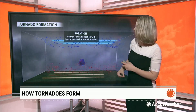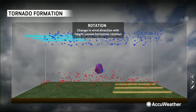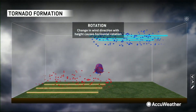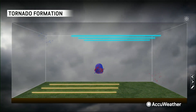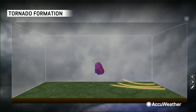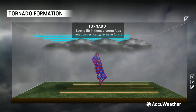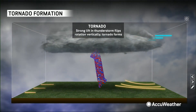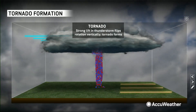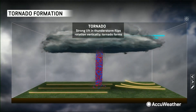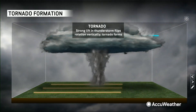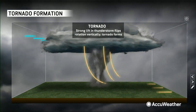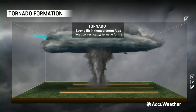That tube spiraling up shows you the horizontal direction, but then let's throw a thunderstorm into the mix. Thunderstorms have updrafts and downdrafts, so they have a lot of rising and sinking motion. And this is how we get that rotation to become vertical — and that is what helps the tornado form.